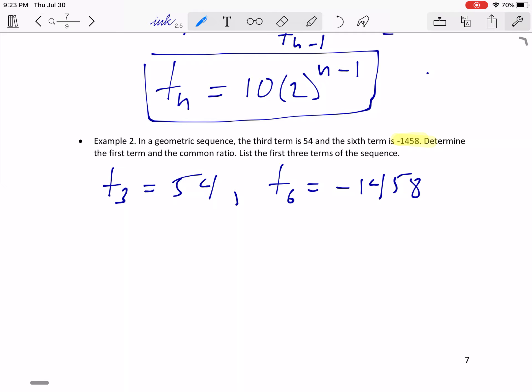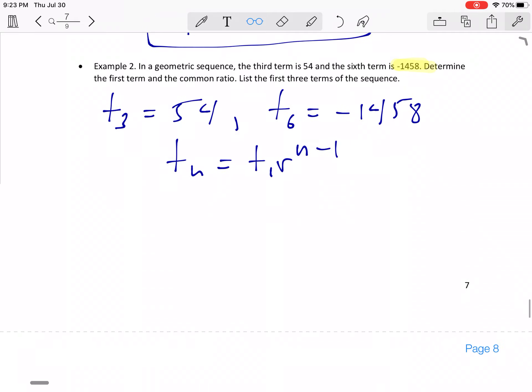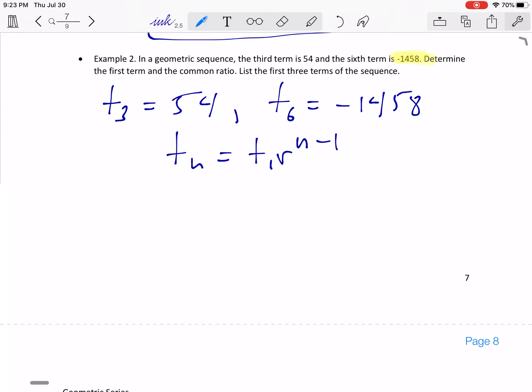So what we have to do is now we have to write the expressions for both T3 and T6. So remember the general equation here is Tn equal to T1 r to the n minus 1. So let's work off of T3. So for T3 is equal to 54. We don't know what T1 is and we don't know what R is, but we know it's the third term, so it's 3 minus 1. So this is going to be 54 is equal to T1 r squared. And so if we isolate that for T1, then T1 is equal to 54 divided by R squared.